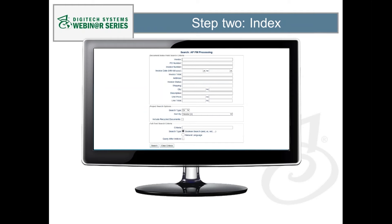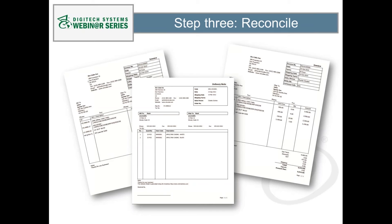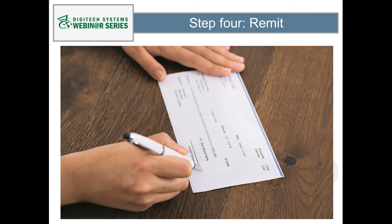Now that you've gotten rid of your paper invoices, you've got a bunch of digital invoice files. Step two is to index the new digital invoices so you can find them again using keyword search. Eliminating manual effort here is key. Look for software options that include the ability to automatically identify and classify invoices by type, and that will electronically extract the critical information off the invoices so you don't have to hand-key anything.